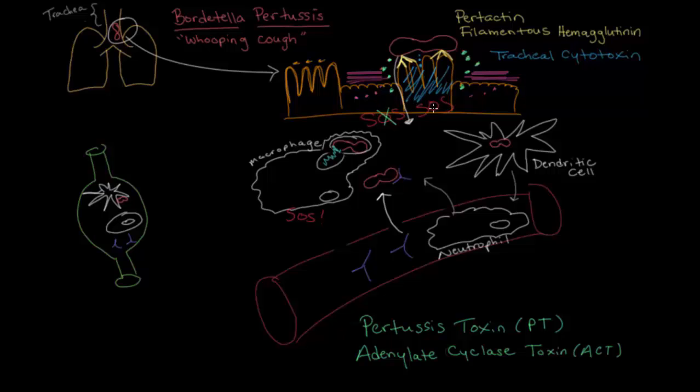For the barrier cells and the macrophages, PT and ACT prevent them from sending out this SOS signal to notify the rest of the immune system that the infection has occurred. And if there's no SOS signal, you can imagine that neutrophils aren't going to be able to follow the signal to travel out of the blood and into the tissue where the infection is happening. And over here, the dendritic cells won't be able to head to the lymph nodes.